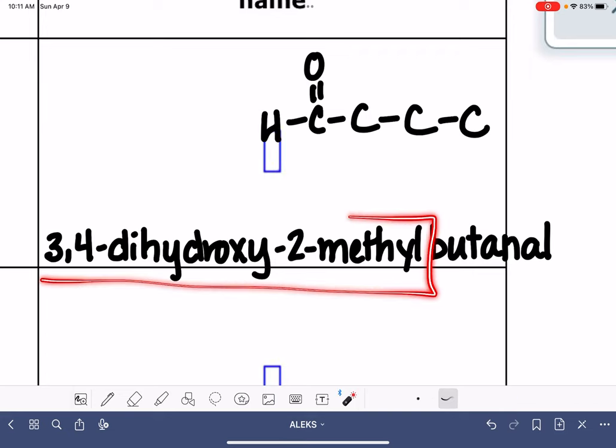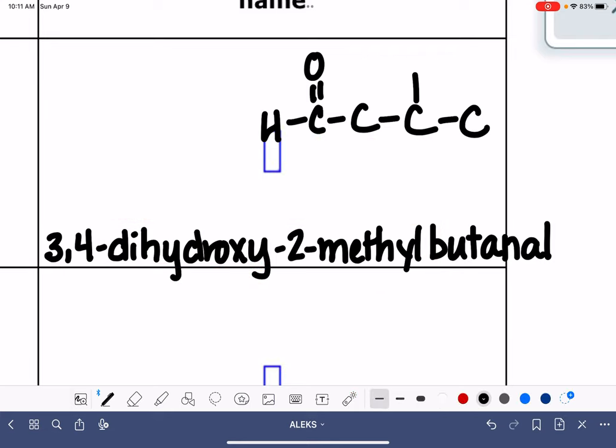Then I'm going to add my substituents. I have on carbons three and four two hydroxys. One, two, here's three, so I need to put a hydroxy here. And here's four, put a hydroxy there.